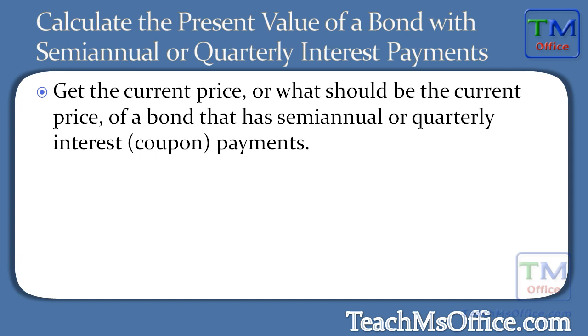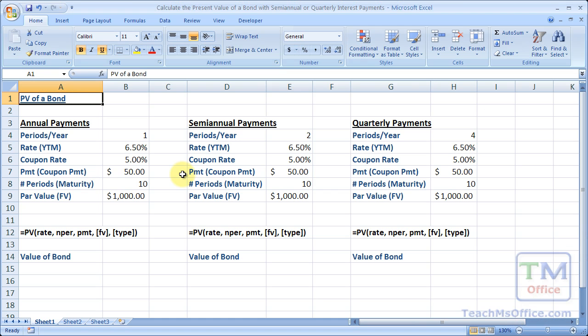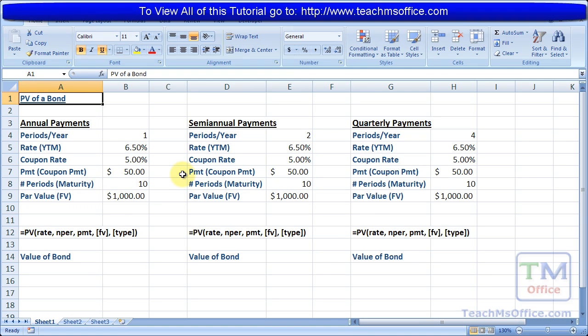So let's go to Excel and get started. Here I have a setup that's going to show you how to calculate the present value or the current price of a bond for a bond that makes one payment per year, so annual payments, two payments per year, semi-annual payments, and quarterly payments.